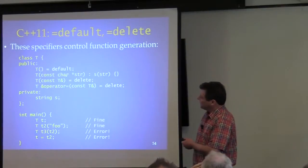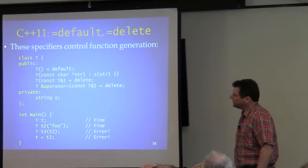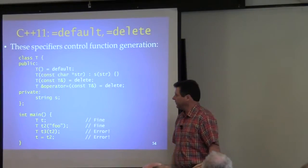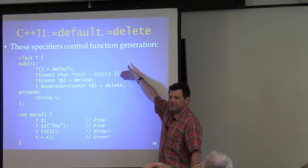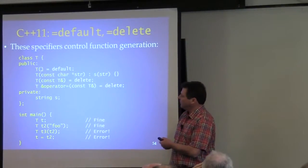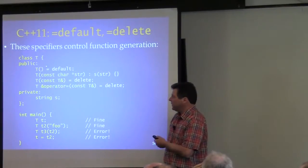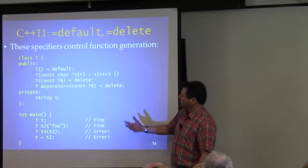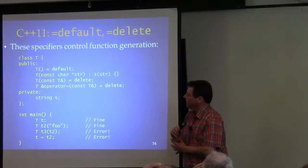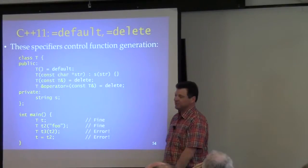You can also explicitly specify using the default keyword, meaning the one the compiler would generate if you didn't declare it. That's really useful because just omitting it means the compiler generates it for you — but how would you get the default constructor generated for you if you already have another constructor? You'd have to write it. It's more self-documenting to say equals default, especially when you have another constructor defined.